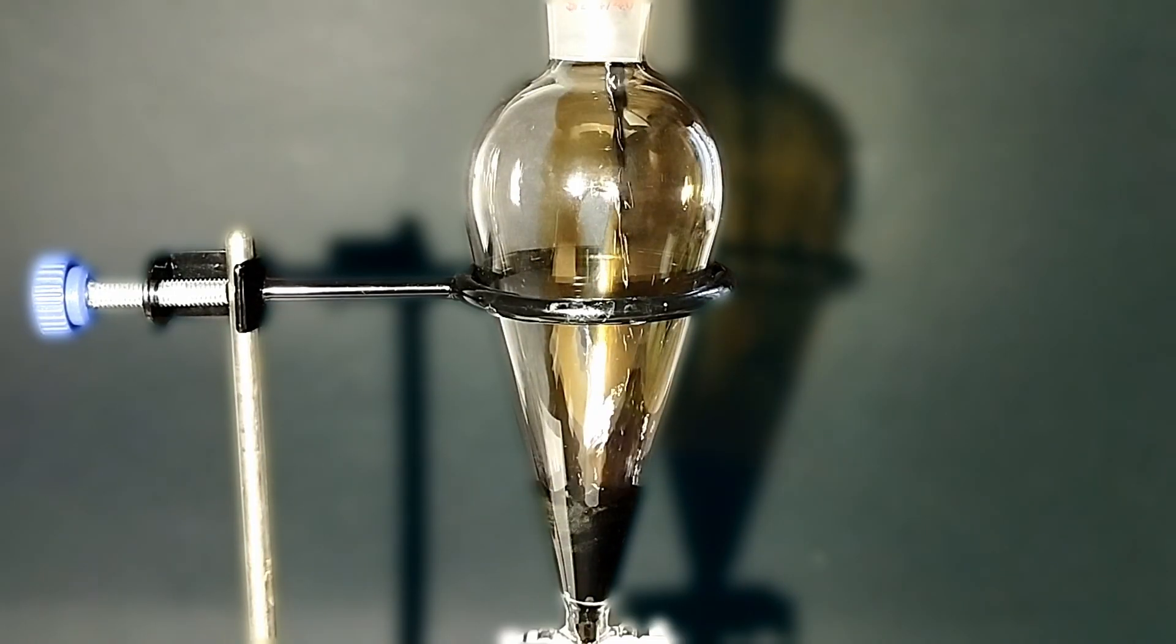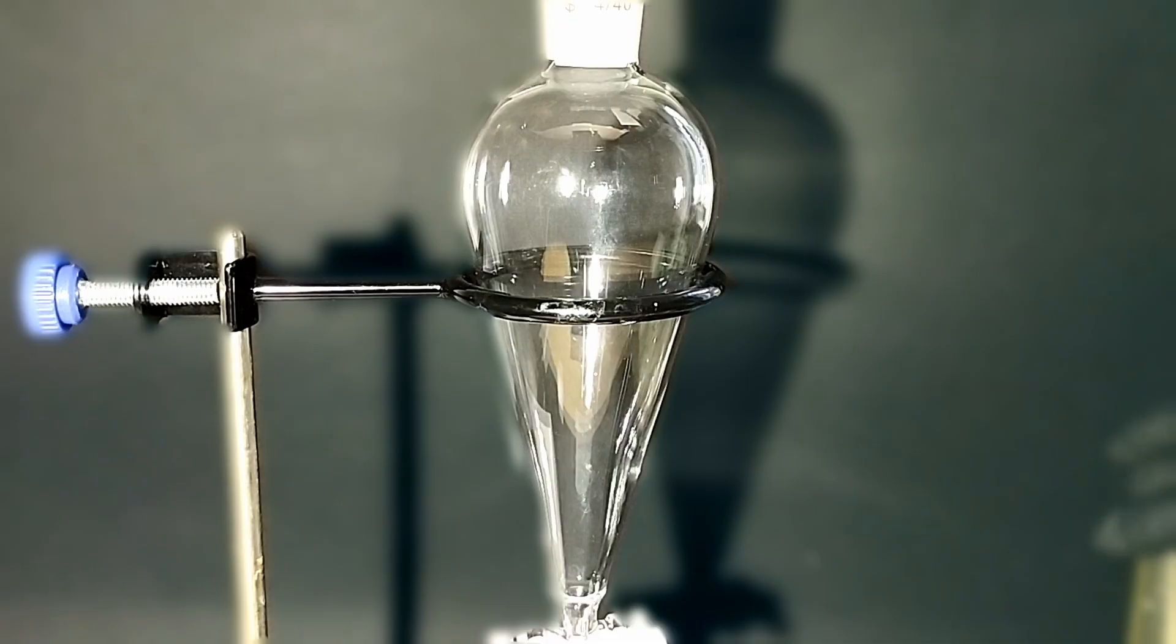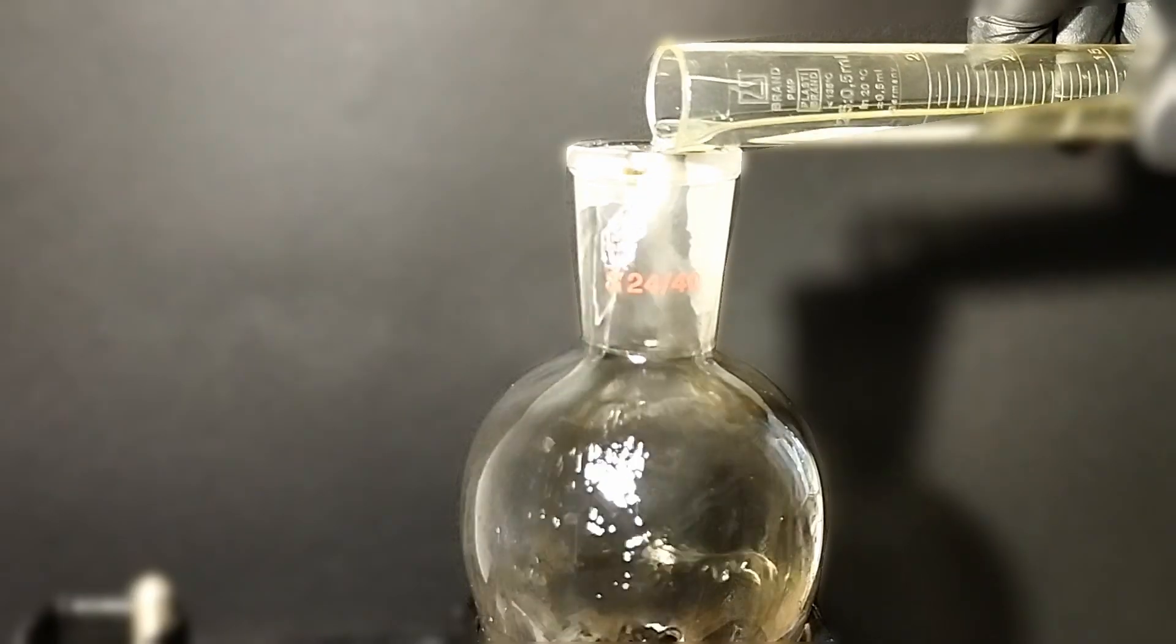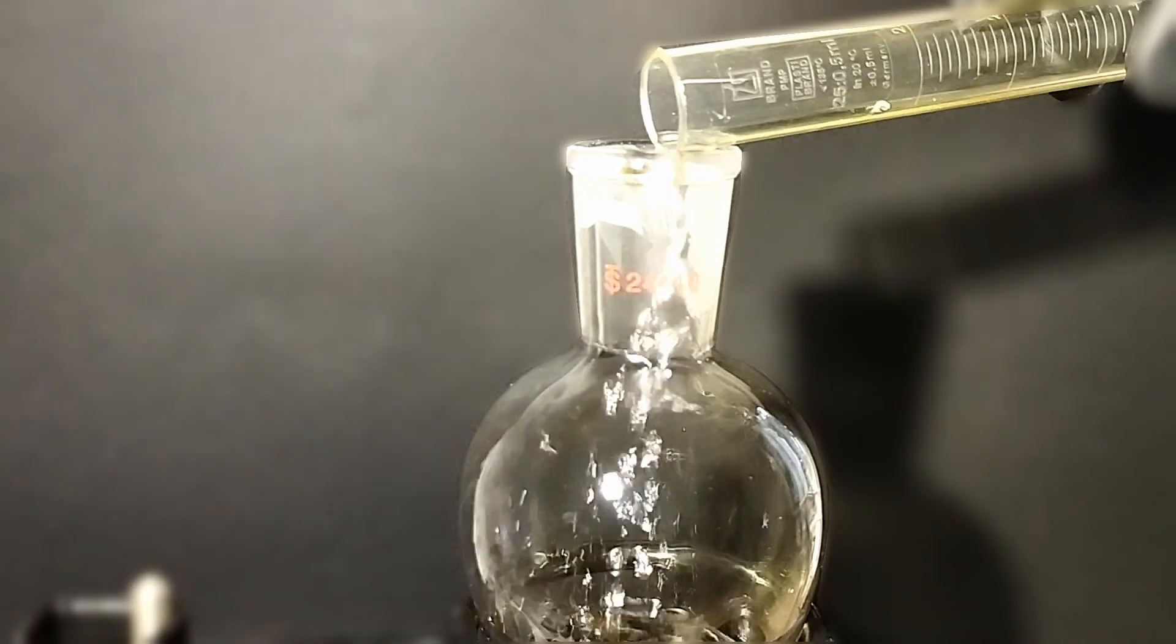Anyway, I then poured the mixture in a separatory funnel and added 100 milliliters of water. Then I poured 15 milliliters of dichloromethane.